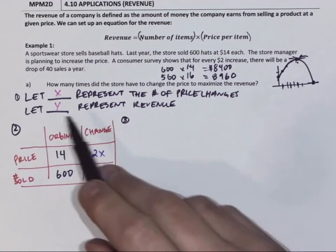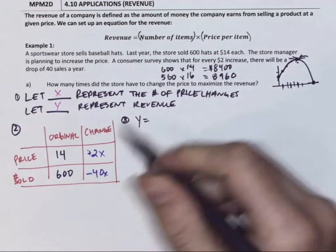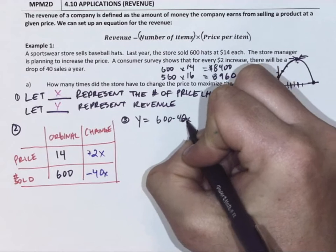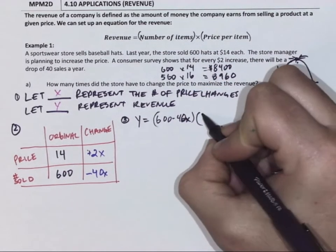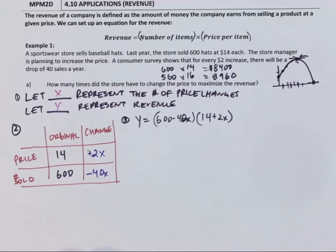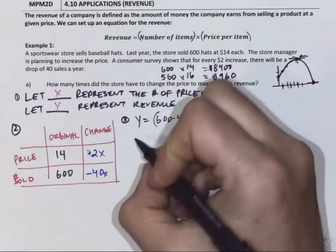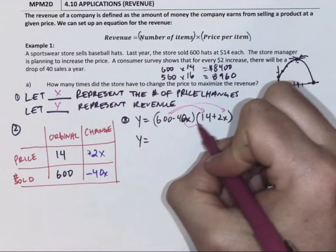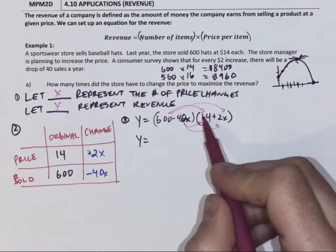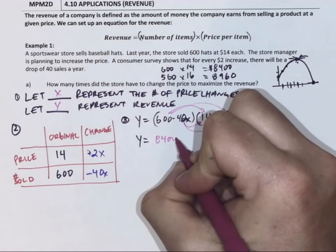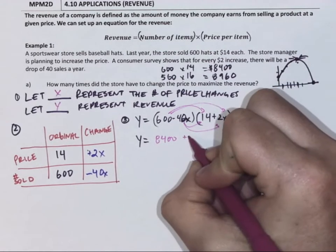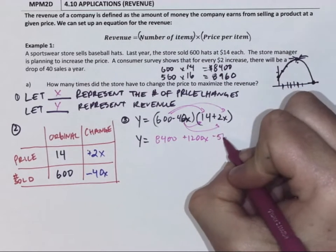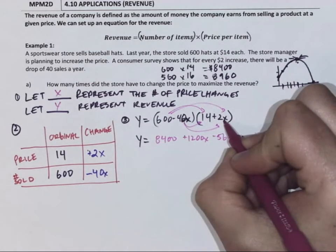So step three, we have an equation. Y equals the number of items times the price per item. From there, we're going to get it in standard form. To do that again, we're going to FOIL. Six hundred times fourteen, six hundred plus two X, minus forty times fourteen, and negative forty plus two X.